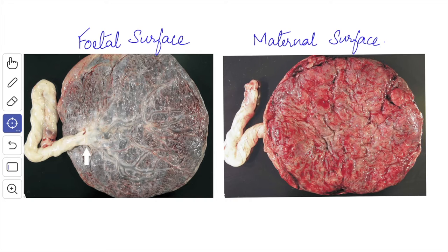When you see the gross anatomy at full term, the placenta is disc-like and presents, after separation from the uterine wall, two surfaces. One is the fetal surface, the other one is the maternal surface, and you have the peripheral margin.